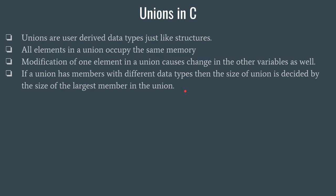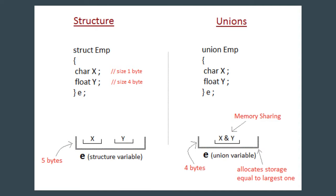For example, if there are three variables — a short int, a float, and a long — then the size of the union will be equivalent to the size of a long variable, that is eight bytes, and all the members will use that same memory.